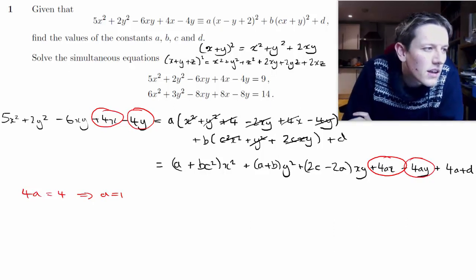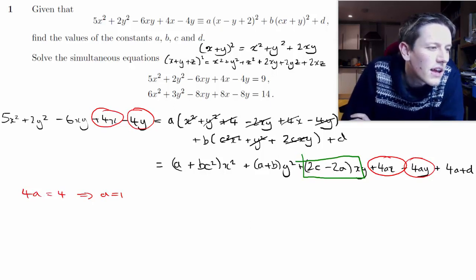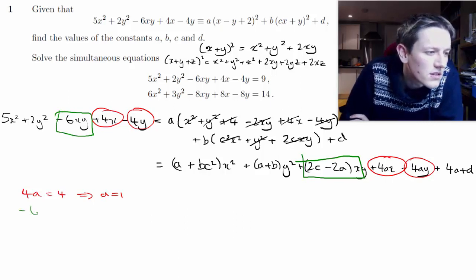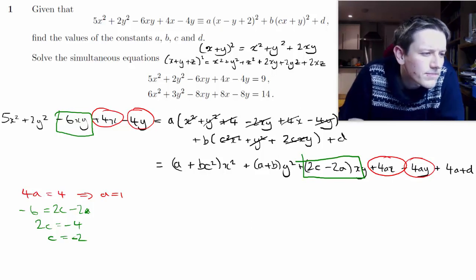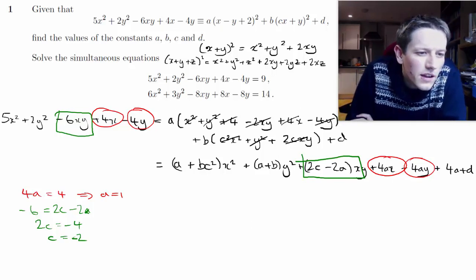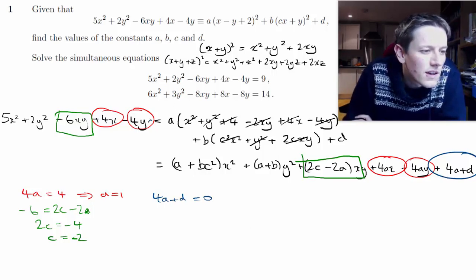This xy term only has a and c in it, so it lets us find c. We have −6 = 2c − 2a, and since a = 1, we get 2c = −4, so c = −2. For the constant term, 4a + d = 0, and since a = 1, that tells us d = −4.